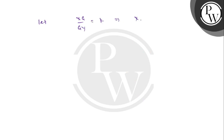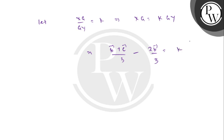Now let XG/GY = K. This implies XG = K·GY. So: position vector of G minus position vector of X equals K times (position vector of Y minus position vector of G). That gives us: (vector B + vector C)/3 − 2·vector B/3 = K·[λ·vector C/(λ+1) − (vector B + vector C)/3].